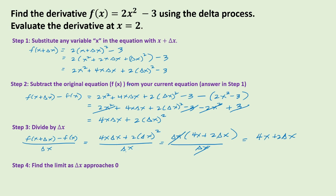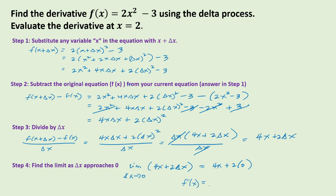Step four is to find the limit as delta x approaches zero. So we have the limit of 4x plus 2 delta x as delta x approaches zero. This gives us 4x plus 2 times zero. Therefore, the derivative of the given function 2x squared minus 3 is 4x.